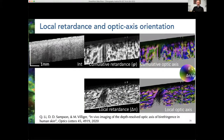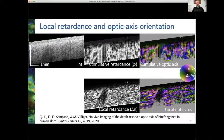We're able to generate cross-sectional images in depth. This slide highlights the difference between local retardance and local optic axis versus their cumulative equivalents. It's very difficult to map the cumulative equivalents back to anything you might see in the sample. Being able to calculate these local parameters has proven to be absolutely vital.